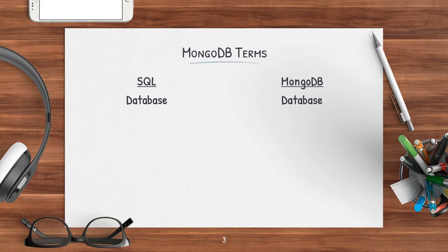In SQL we have a database, and in MongoDB as well we have a database. Now inside the database we have a table in SQL. In MongoDB we refer to a table as a collection. So inside the database we have collections. Each table has some set of columns, while in MongoDB each collection has some set of fields. So the column is termed as a field in MongoDB.